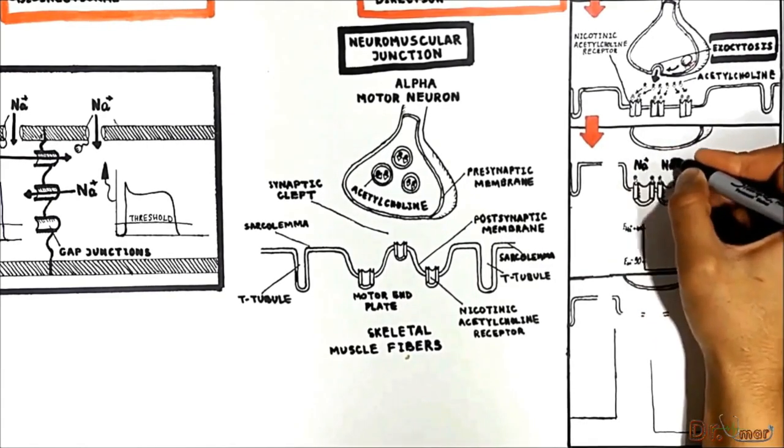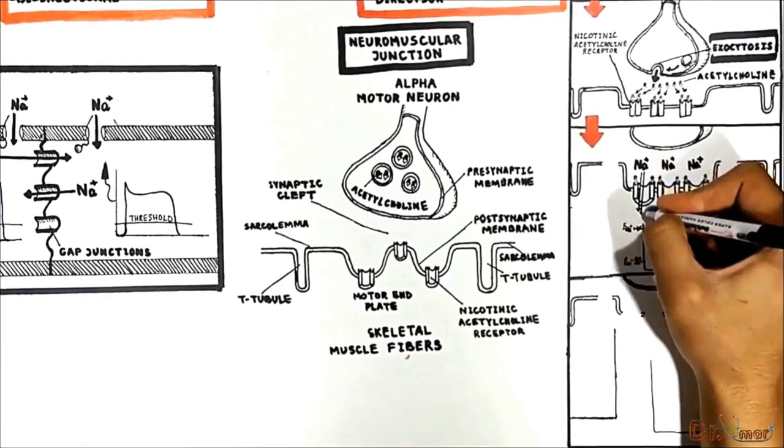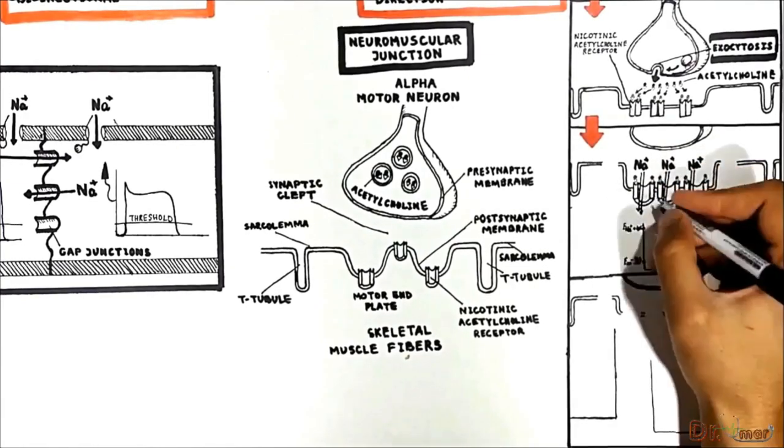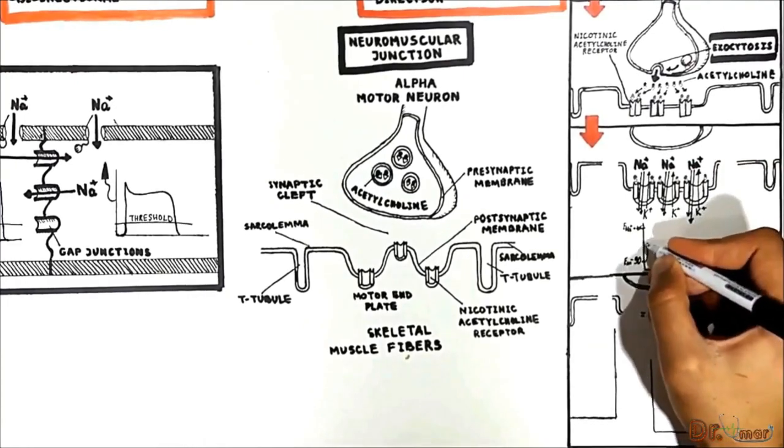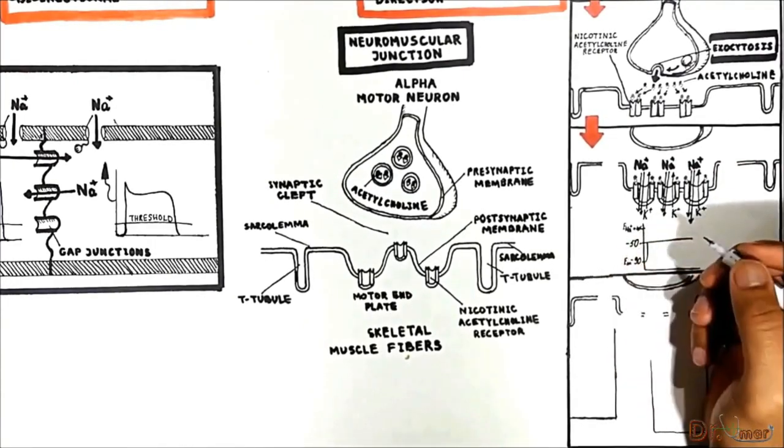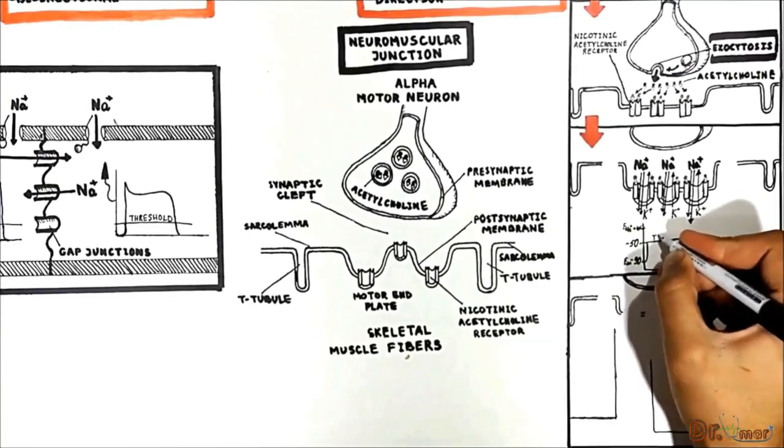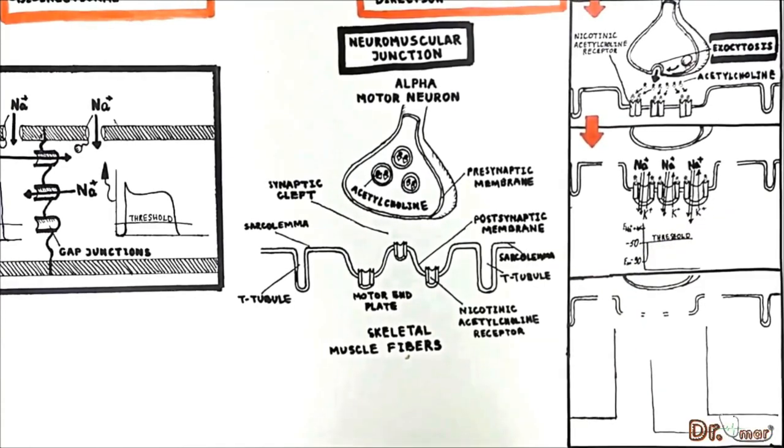Therefore, sodium massively rushes in whereas a tiny amount of potassium leaves the cell. Sodium influx locally depolarizes the motor end plate up to negative 50 mV, which is the threshold.